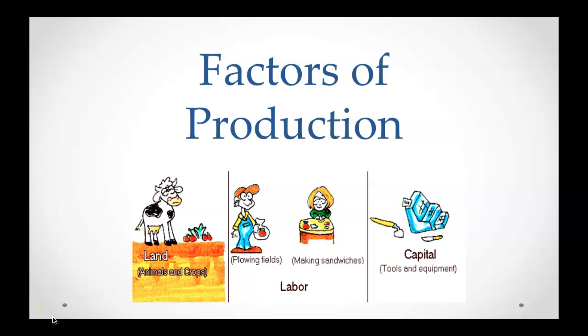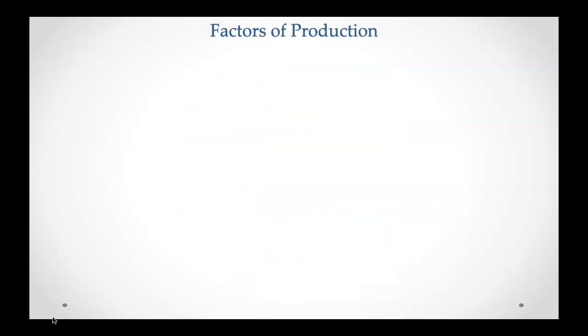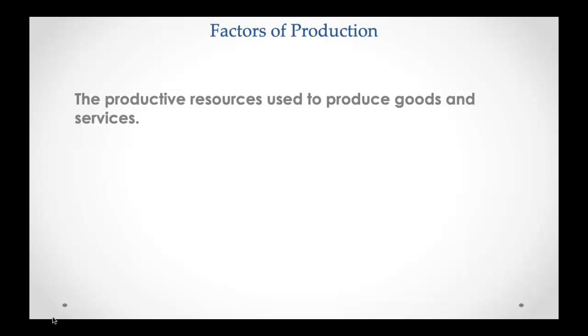We're going to do a relatively short lesson on the economic term 'factors of production.' What we really mean by that term are the things that are used to produce things — things that are used to make things. In your study guide, go to the second page right after opportunity cost and fill in that first vocabulary box with the words 'factors of production.' The definition for your worksheet: productive resources used to produce goods and services.